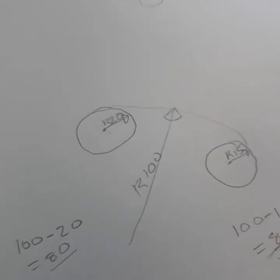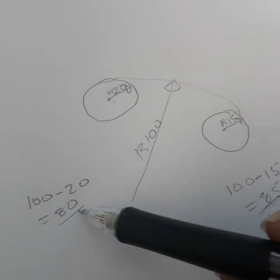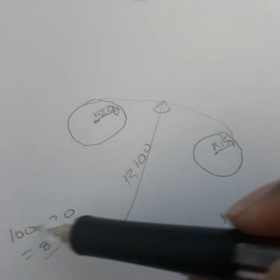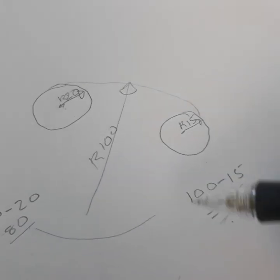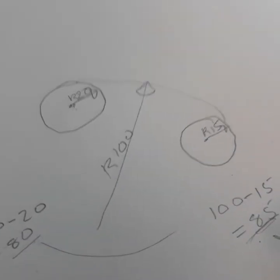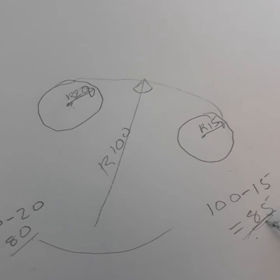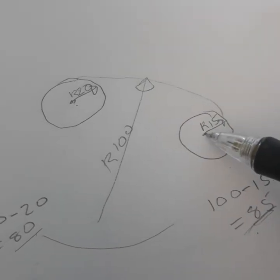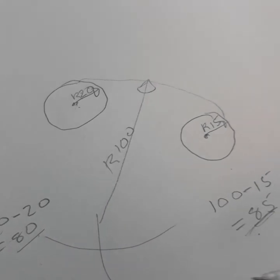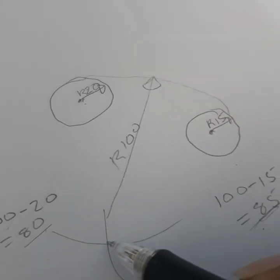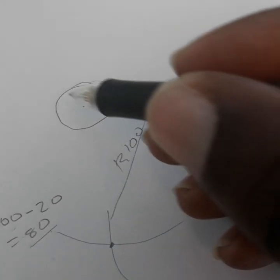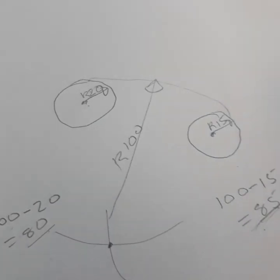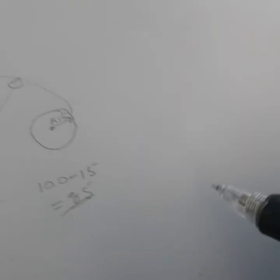Now take a compass, measure 80, and put your compass here because 20 was for this circle. Make an arc on this side and an arc on this side. Then measure 85 with your compass — remember 15 was for the second circle. Put your compass there, make an arc, and where they meet is your center point. Put your compass there, measure radius 100, and you get this curve.